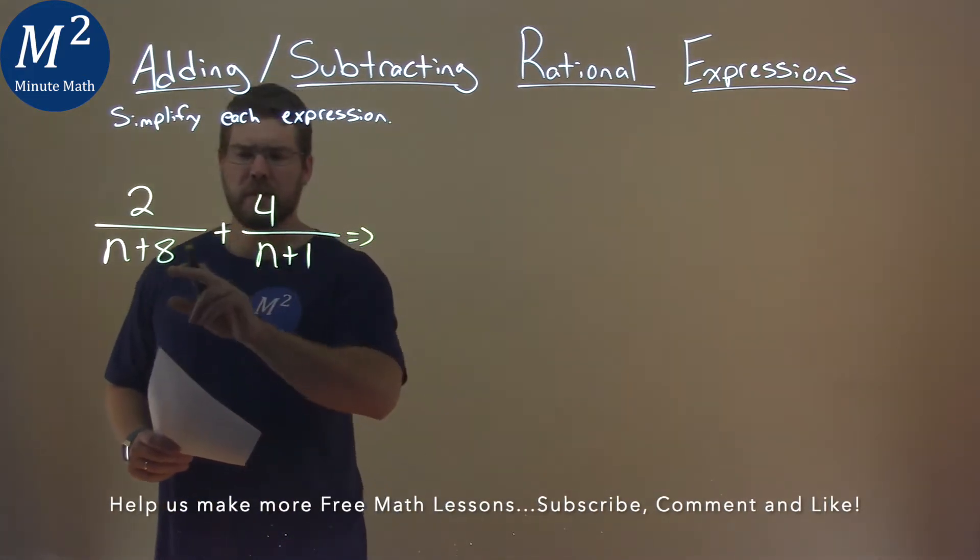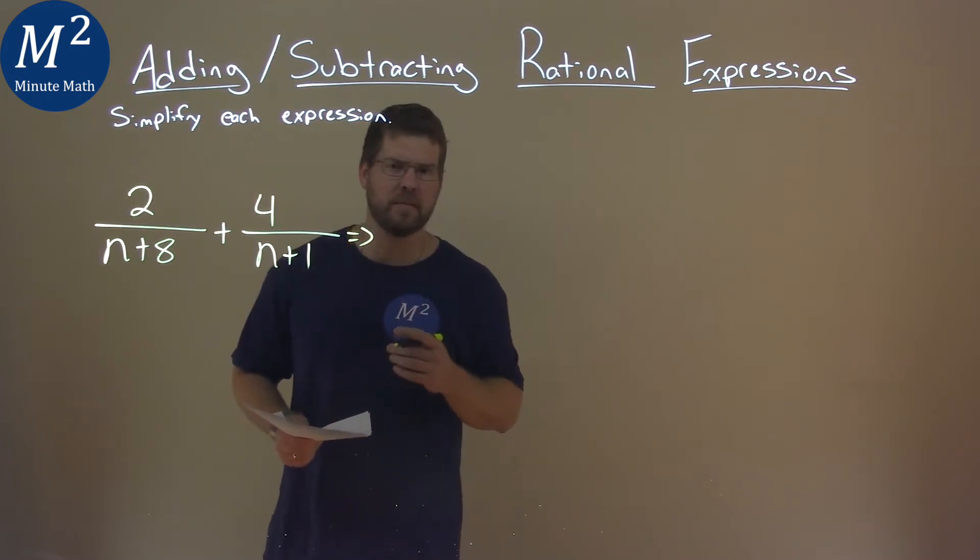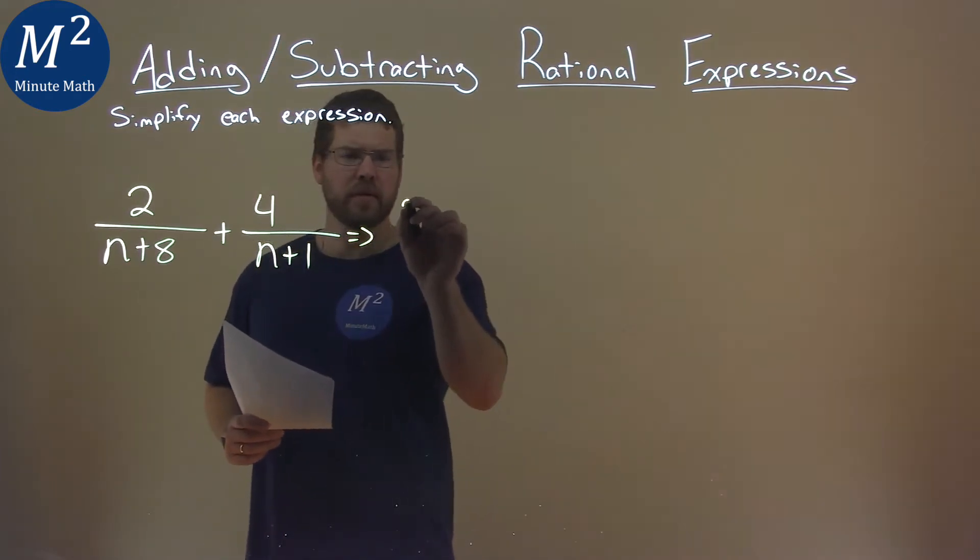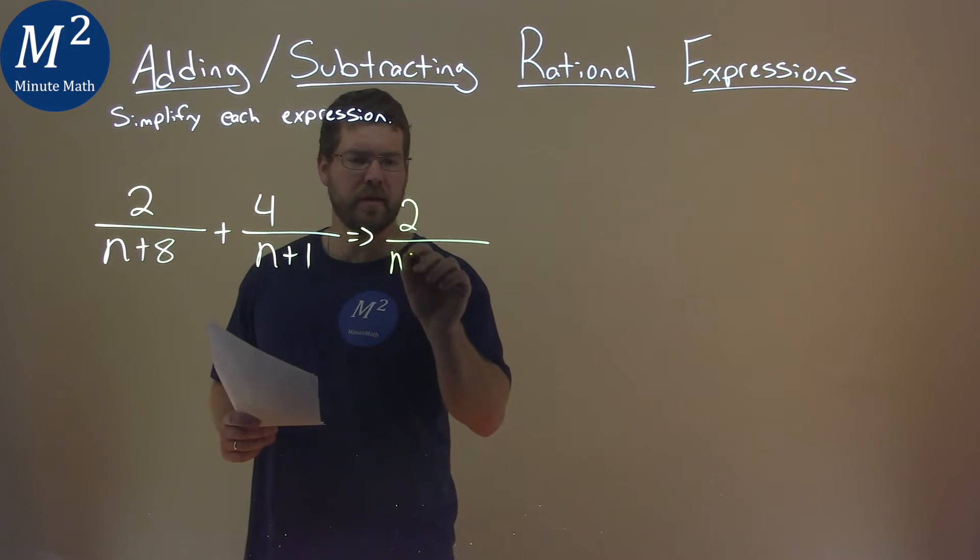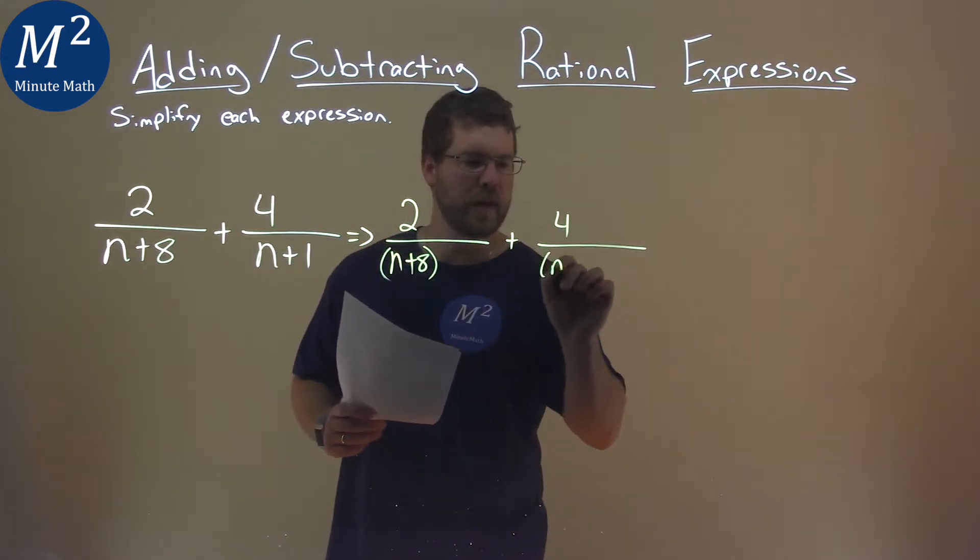Notice that we don't have the same denominator here for each fraction, so we can't add them right away, but we have to have the same denominator. So I'm going to rewrite this: 2 over n plus 8, and we have plus 4 over n plus 1.